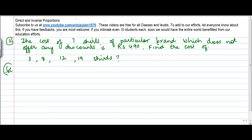Okay, solution. Now what we are told is that the cost of seven shirts is equal to 490. And the manufacturer does not offer any discount, so basically if there are no discounts given irrespective of the number of shirts that you buy, then the cost and the number of shirts should be directly proportional.